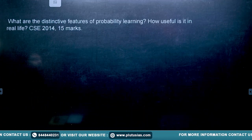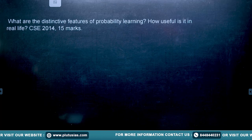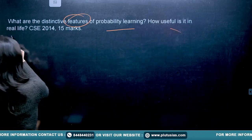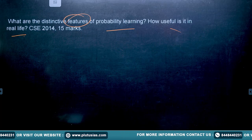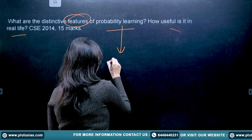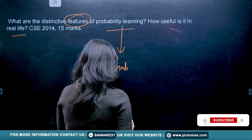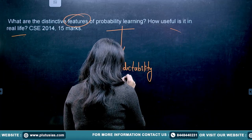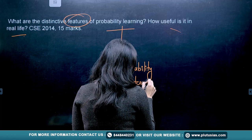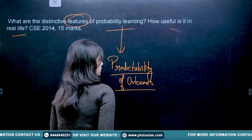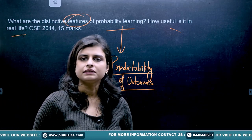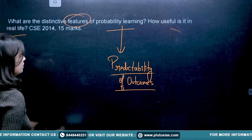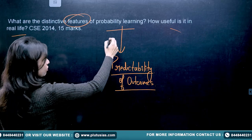The next question is: what are the distinctive features of probability learning and how useful is it in real life? First, you need to talk about what probability learning is. Probability learning is basically learning that happens with the predictability of outcome — that means you predict what the outcome could be, and that is how probability learning happens.